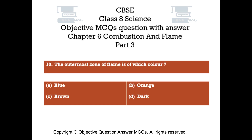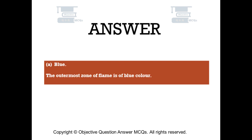Question number 10. The outermost zone of flame is of which color? Option A Blue, Option B Orange, Option C Brown, Option D Dark. The right answer is Option A — the outermost zone of flame is of blue color.